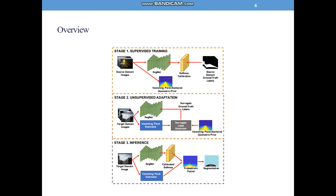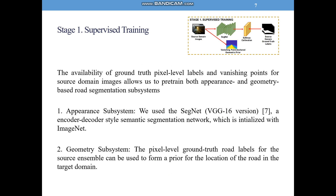Now let's briefly discuss the implementation of our algorithm. As can be seen from this flowchart, the implementation involves three stages: supervised training, unsupervised adaptation, and inference. In stage one, supervised training, the availability of ground truth pixel-level labels and vanishing points for source domain images allows us to pre-train both appearance and geometry-based road segmentation subsystems.